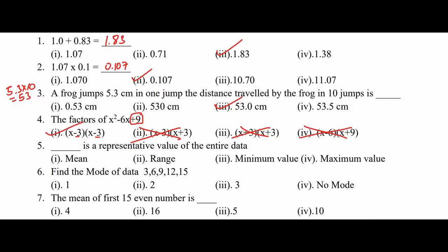Dash is a representative value of entire data. Which single representative value can represent all the data? The answer is mean. So first option: mean.